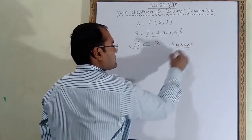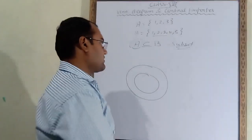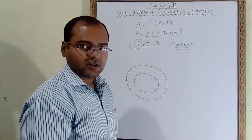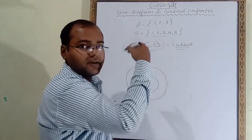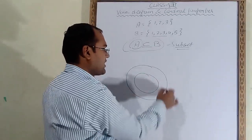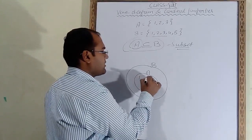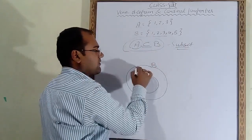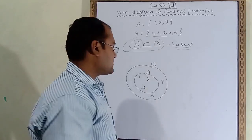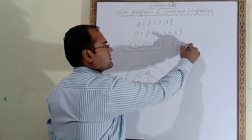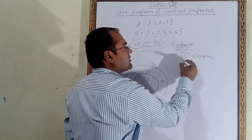Now how will we represent this with a Venn diagram? To represent a subset, you have to draw two circles — one larger circle and inside that a smaller second circle. The larger circle is B and inside it we place A. A's elements are 1, 2, 3 and we write them inside the inner circle. The remaining B elements — 4 and 5 — are written outside the inner circle but inside the outer circle.